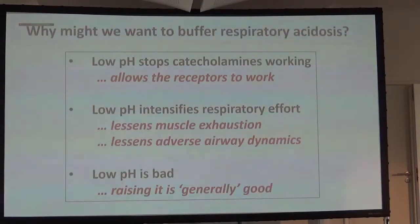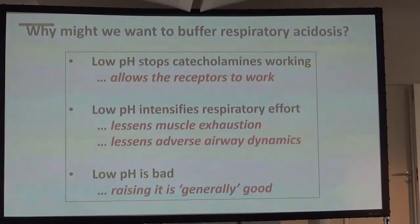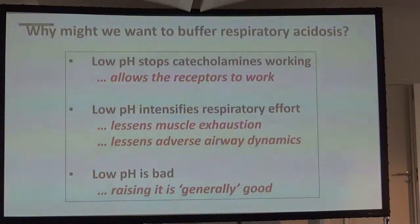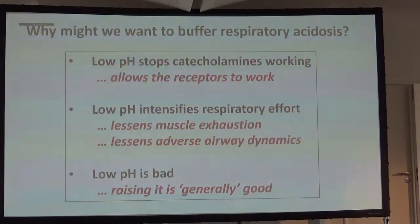The key questions to ask in this topic are: what might you want to achieve? You have a patient with a pH of 7.5 from acute hypercapnia — what might you want to achieve, as opposed to simply asking do you want to make pH normal? One theory is that low pH stops catecholamines working, and if you buffer the pH it allows the catecholamine receptors to take effect. A second idea is that low pH exquisitely intensifies inspiratory effort — if you can minimize that, you will lessen muscle exhaustion, though there is a price to pay.